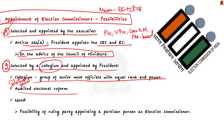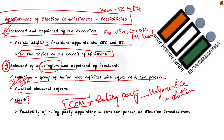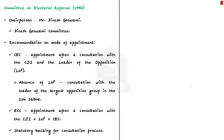Currently, members of ECI are being appointed by the executive. Setting up a collegium would be an electoral reform. According to several committee reports, such a collegium is possible. Why is it needed? Because the ruling party could appoint a partisan person who might favour them in elections. The first committee to suggest this reform was the Committee on Electoral Reforms of 1990, constituted under the then Law Minister Sri Dinesh Goswami — popularly known as the Dinesh Goswami Committee — with the objective of recommending electoral reforms.